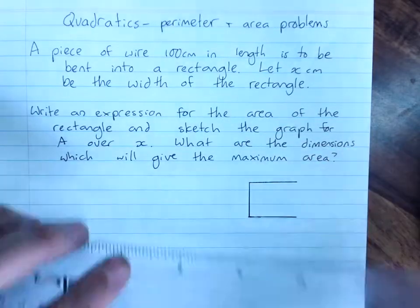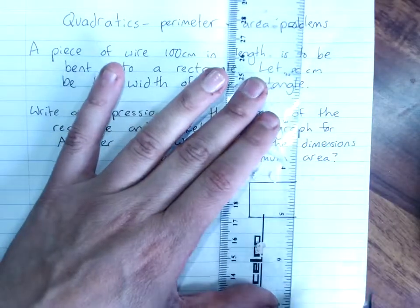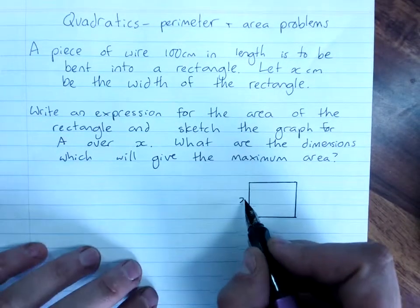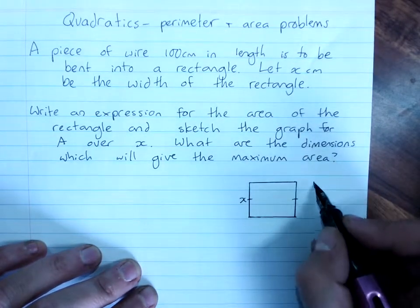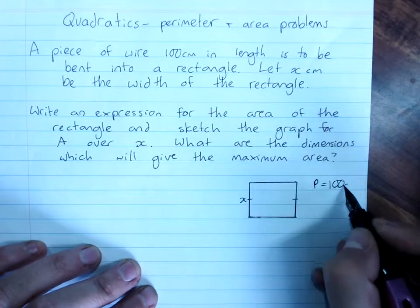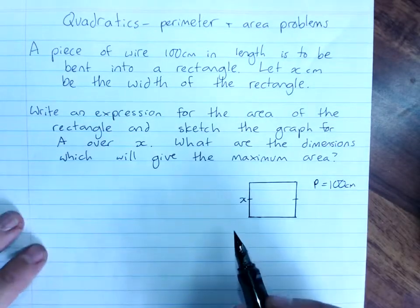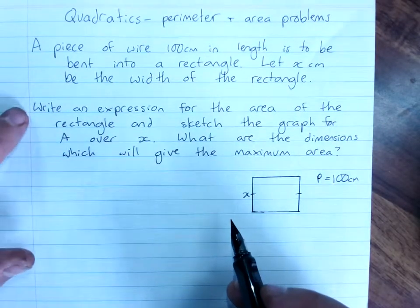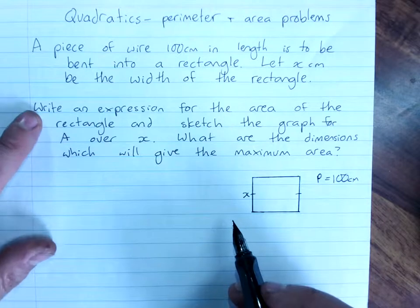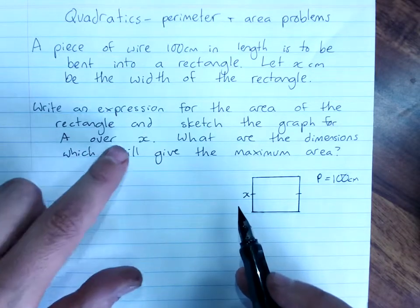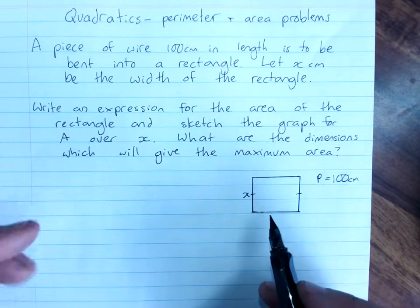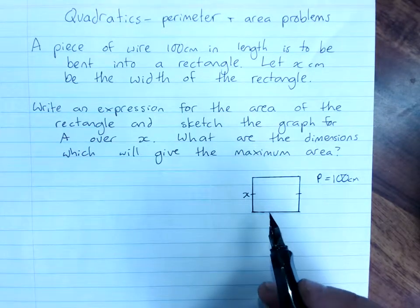So this is my rectangle. X is the width of the rectangle. The perimeter is a hundred centimeters. So what they're asking us to do is to write an expression for the area of the rectangle and sketch the graph for area over x. What are the dimensions which will give the maximum area?